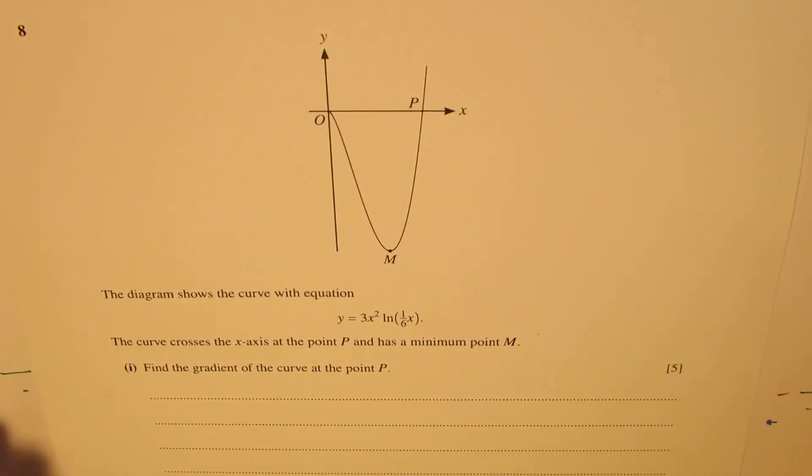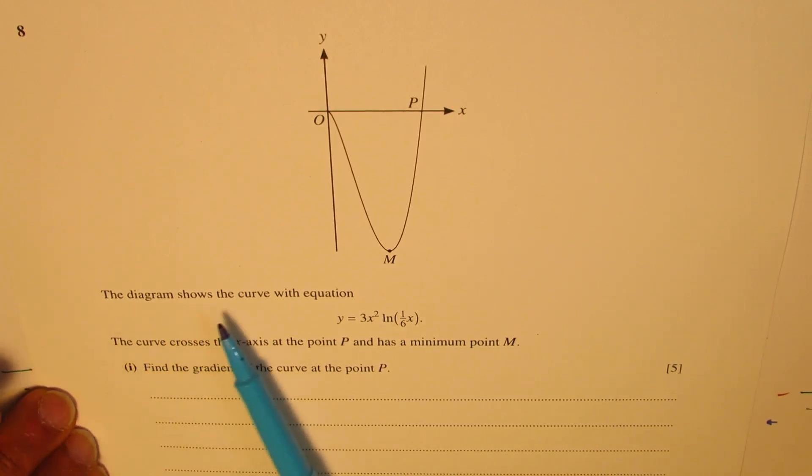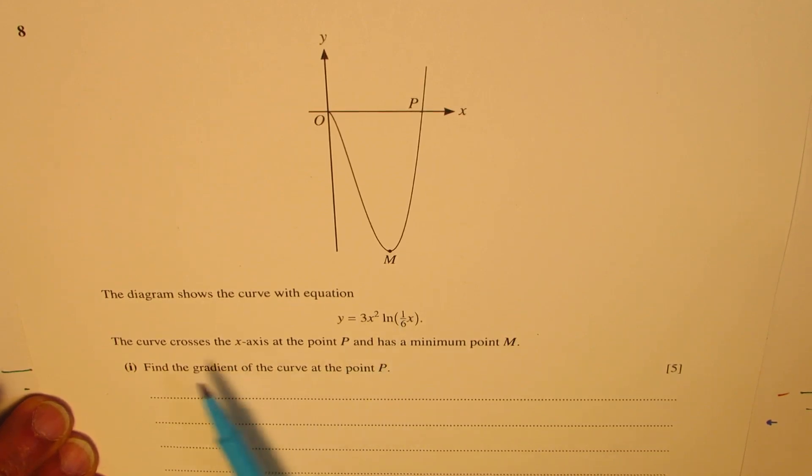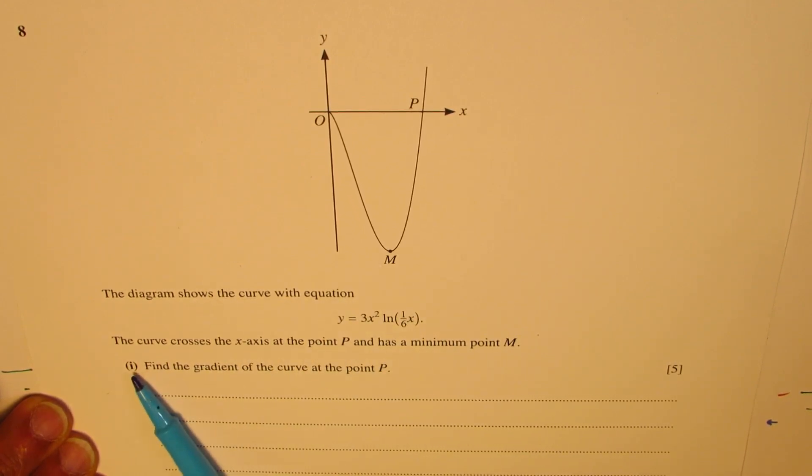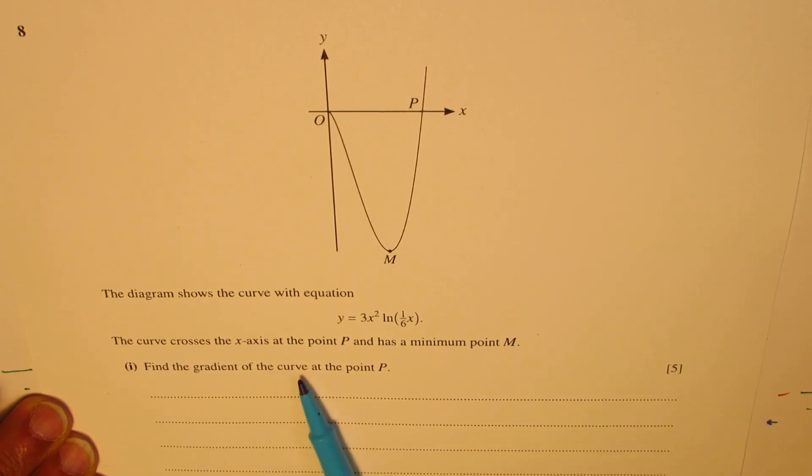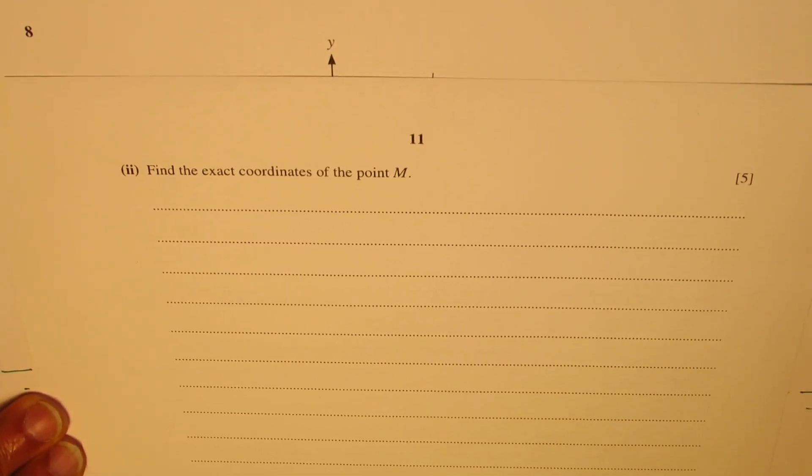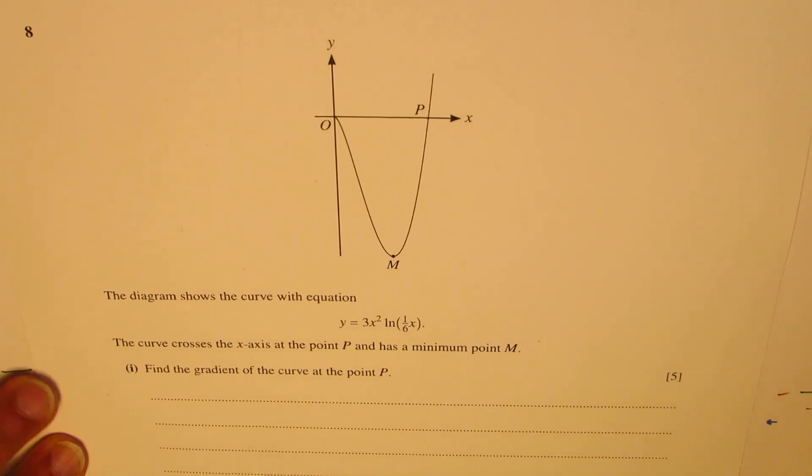The question here is: the diagram shows the curve with the equation y equals 3x squared ln(1/6x). The curve crosses the x-axis at the point P and has a minimum point M. Part 1 is, find the gradient of the curve at the point P. And part 2 is, find the exact coordinate for the point M.